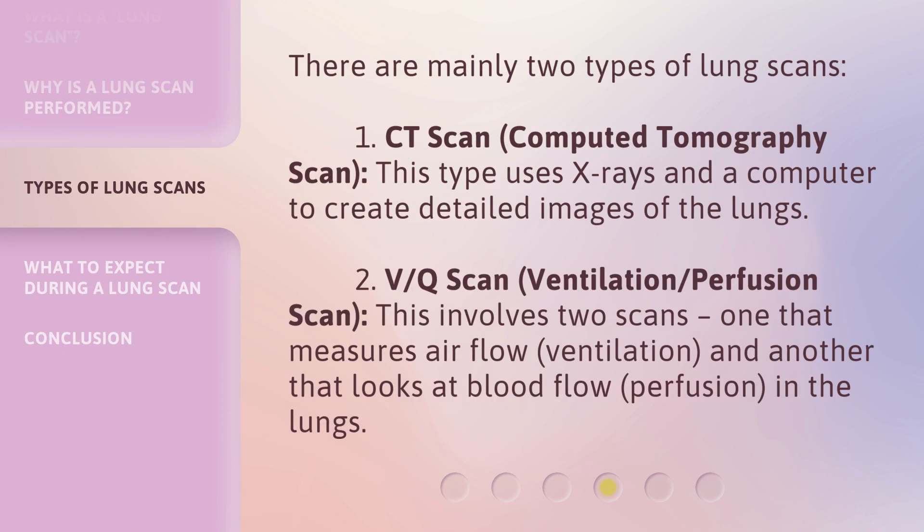There are mainly two types of lung scans. 1. CT scan, computed tomography scan — this type uses x-rays and a computer to create detailed images of the lungs. 2. V-Q scan, ventilation-perfusion scan — this involves two scans: one that measures air flow, ventilation, and another that looks at blood flow, perfusion, in the lungs.